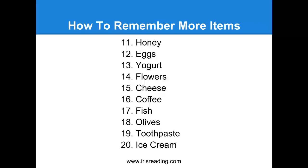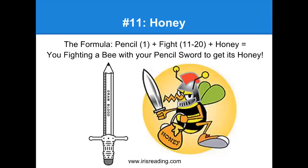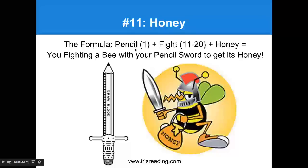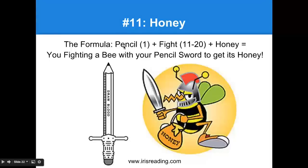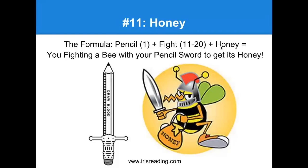Here's the basic formula: for number 11, we take one — which is the pencil — plus fight (because it's in the area of 11 through 20) — plus honey. So the formula is pencil plus fight plus honey, and the visualization is: you're fighting a bee with your pencil sword to get its honey. Picture yourself fighting a bee with a pencil as a sword. You're fighting with this pencil sword to gain access to that bee's honey.